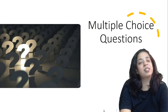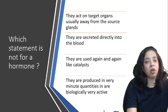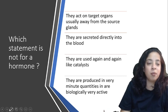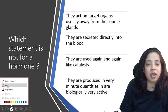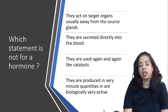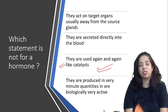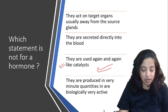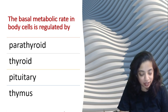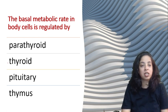Now let's come to MCQs — multiple choice questions. Which statement is NOT true for a hormone? Options: they act on target organs away from source glands; they are secreted directly into the blood; they are used again and again like catalysts; or they are produced in very minute quantities and are biologically very active. The answer is: 'they are used again and again like catalysts' — this is incorrect for a hormone. Next, the basal metabolic rate in body cells is regulated by: parathyroid, thyroid, pituitary, or thymus? The answer is thyroid.